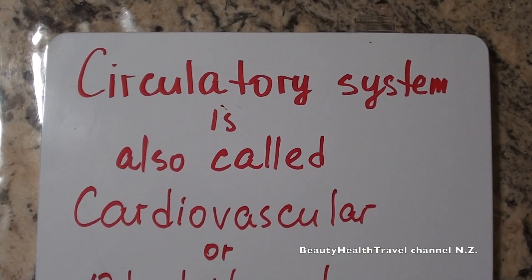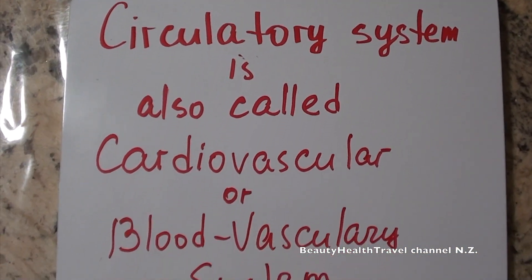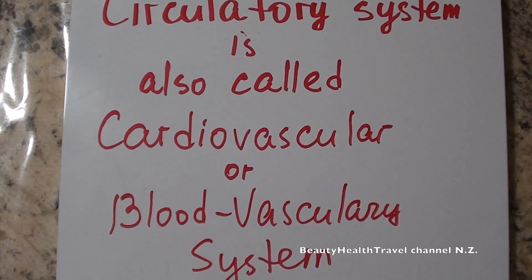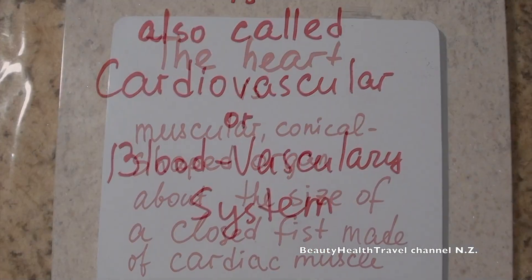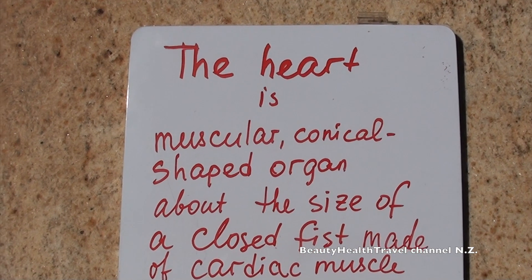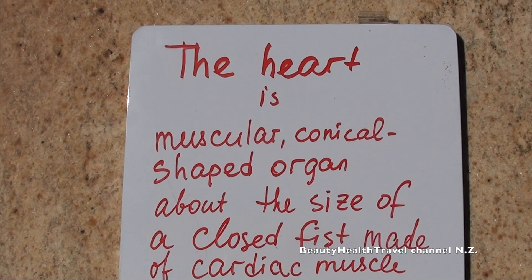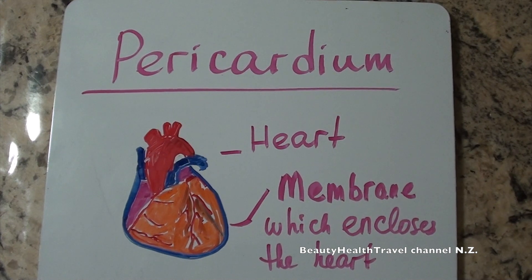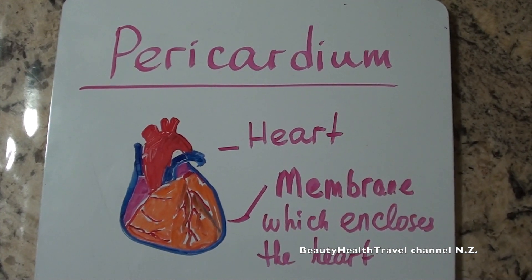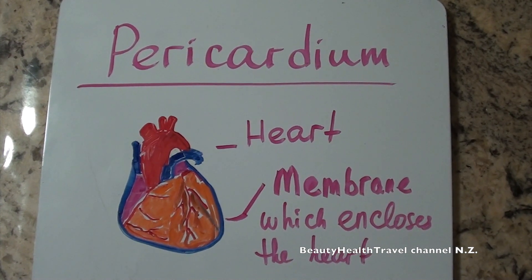The circulatory system is also called the cardiovascular or blood vascular system. The heart is a muscular, conical-shaped organ about the size of a closed fist, made of cardiac muscle. Pericardium is the membrane which encloses the heart.